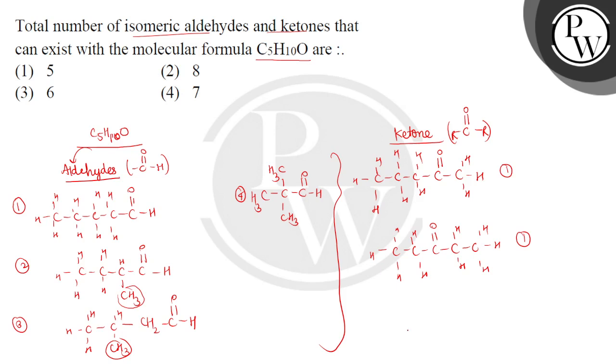Ketones can also be formed in a branched structure. Suppose we have a 4-carbon chain with the ketone group and one branched carbon attached. This is our third ketone structure.